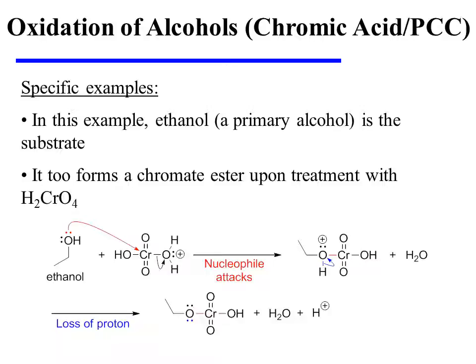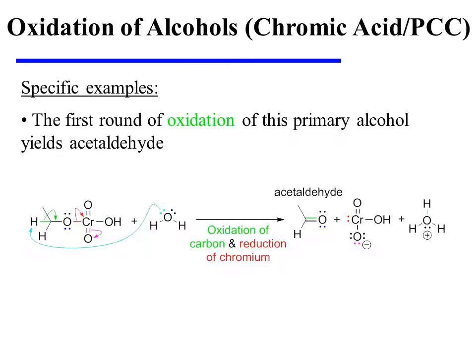In this next specific example, ethanol, a primary alcohol, is used as the substrate. It, too, forms a chromate ester upon treatment with chromic acid. The first round of oxidation of this primary alcohol substrate yields an aldehyde, specifically acetaldehyde.